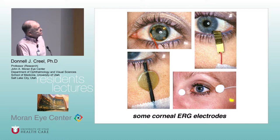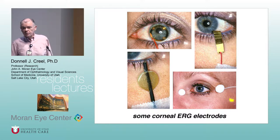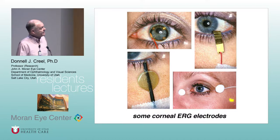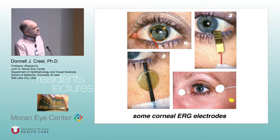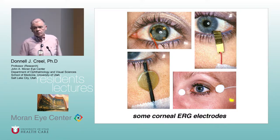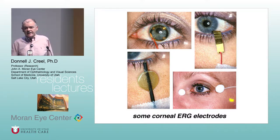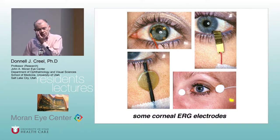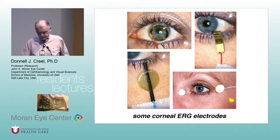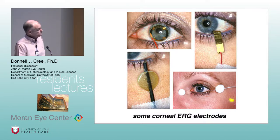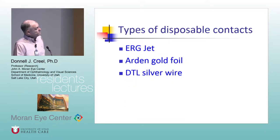I sometimes use this one when I'm testing an infant in the OR that has an eye too small for my smallest speculum contact. It's called the Arden Gold Foil — it's a piece of cassette tape with gold foil on one side. If you've got an eye even smaller, or a case of trauma where the eye is so swollen shut all you can do is crack it open a little bit, those are the three most common disposables used.